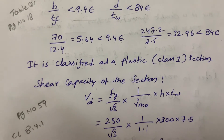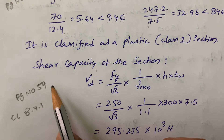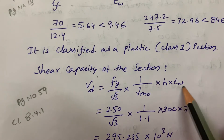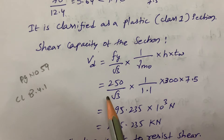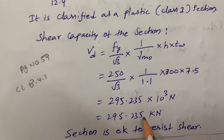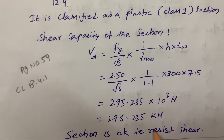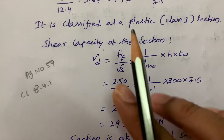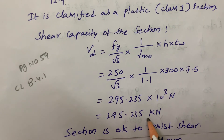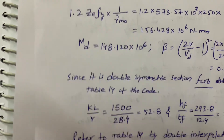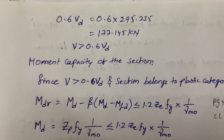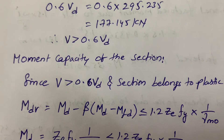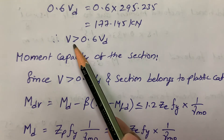For the plastic section we calculate shear capacity. From page 59, clause 8.4.1 of IS800:2007, Vd = (fy/√3) × (1/γm0) × Av, where Av = H × TW is the shear area. Substituting values, Vd = 295.235 kN. Our factored shear force is less than the shear capacity, so the section is okay for shear. Also, 0.6 × Vd = 177.14 kN and V > 0.6Vd, so we check accordingly.